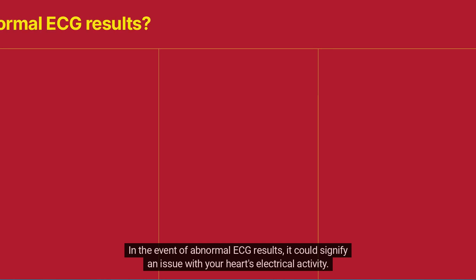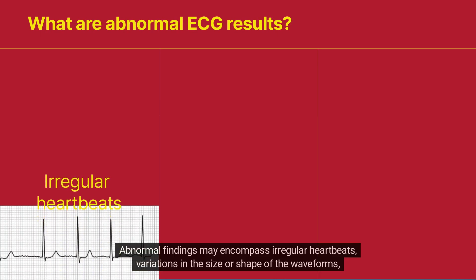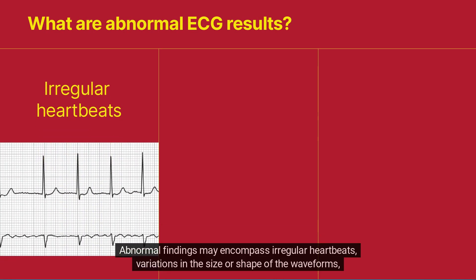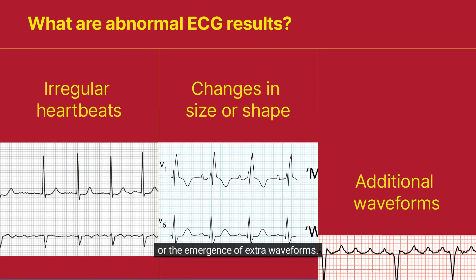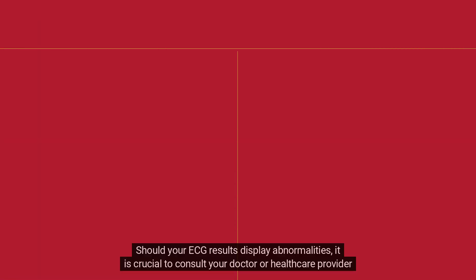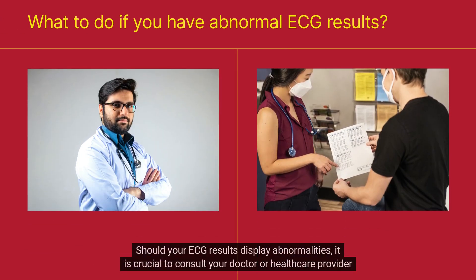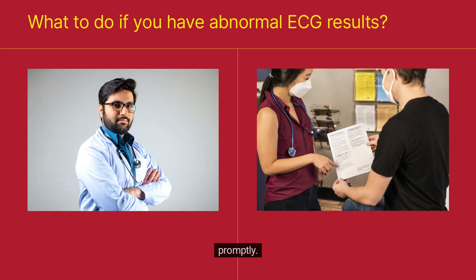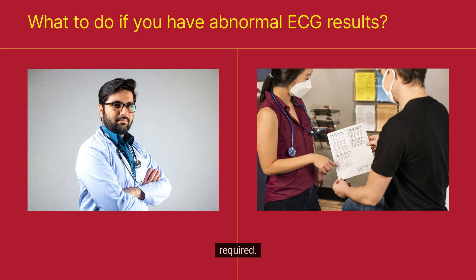In the event of abnormal ECG results, it could signify an issue with your heart's electrical activity. Abnormal findings may encompass irregular heartbeats, variations in the size or shape of the waveforms, or the emergence of extra waveforms. Should your ECG results display abnormalities, it is crucial to consult your doctor or healthcare provider promptly. They possess the expertise to interpret the findings and ascertain if additional testing or treatment is required.